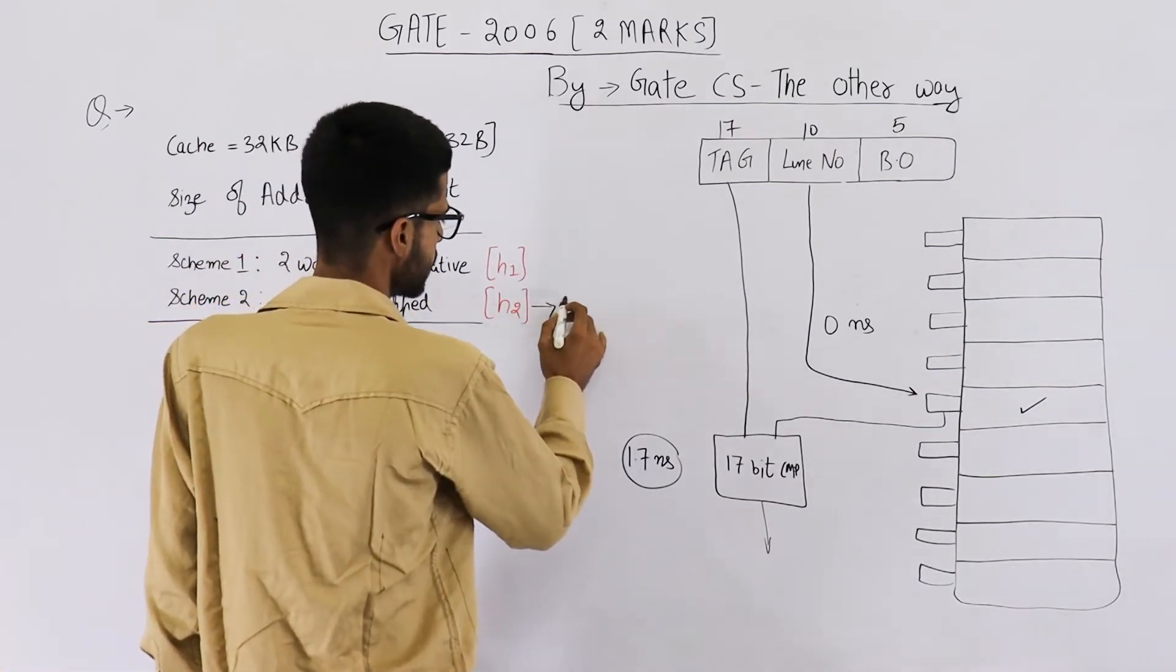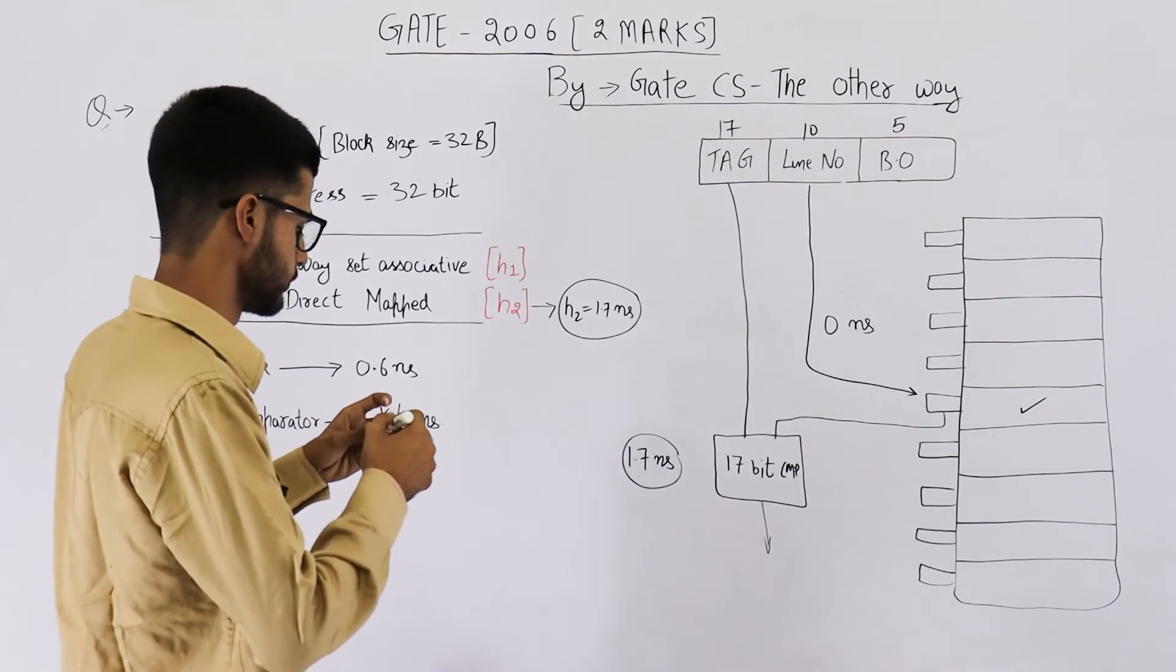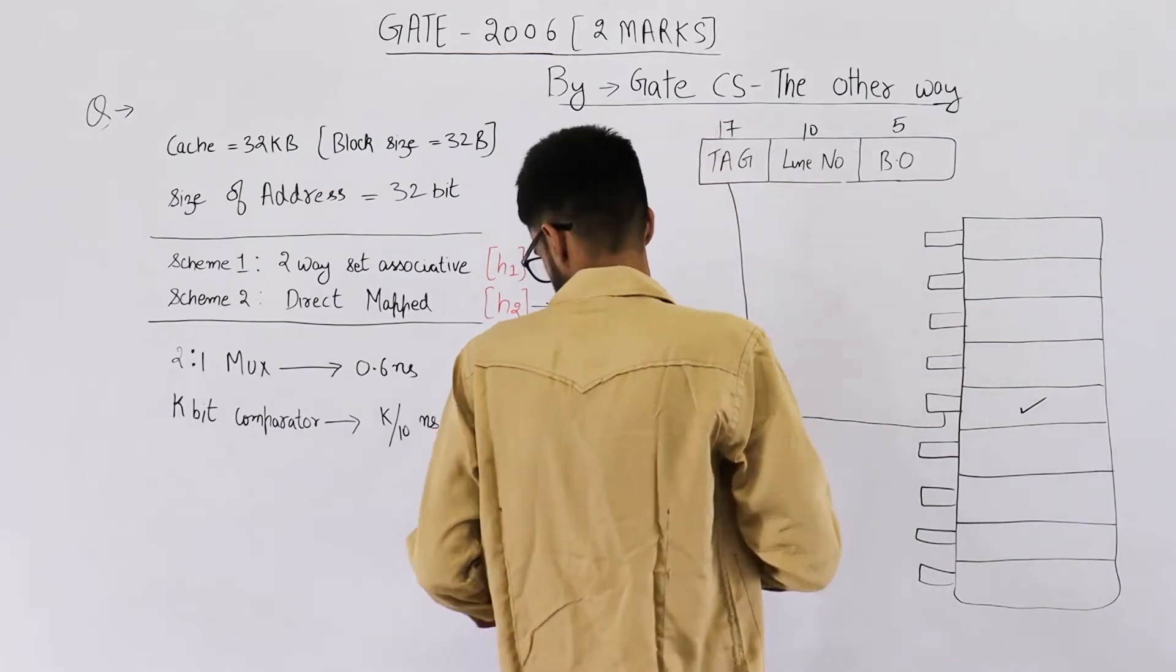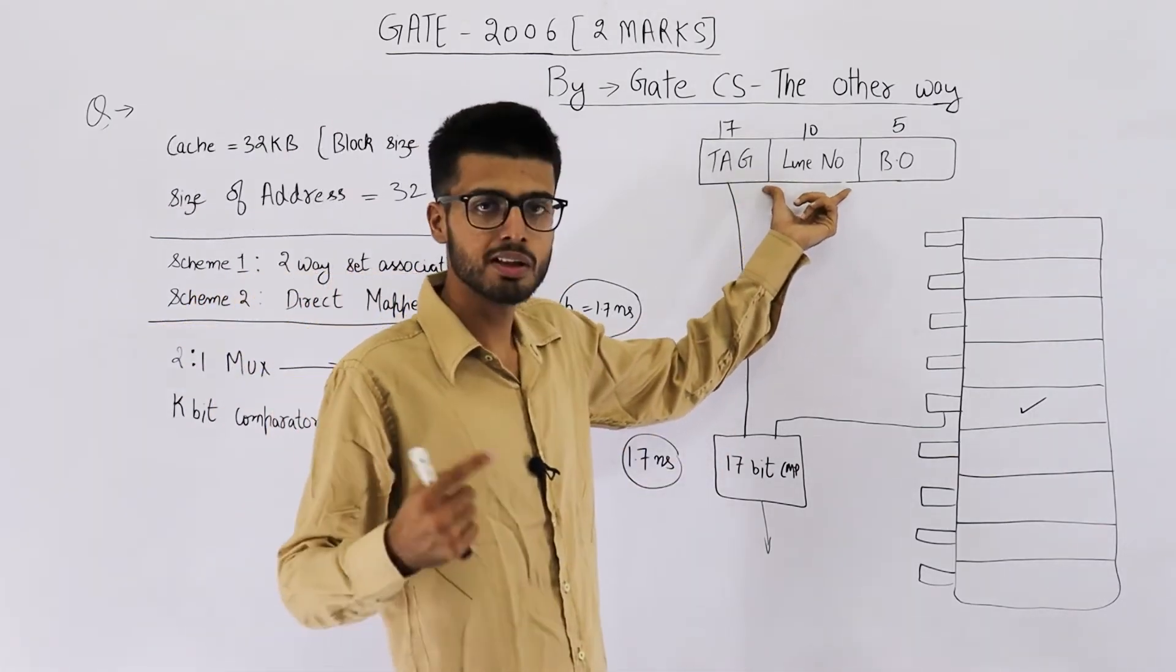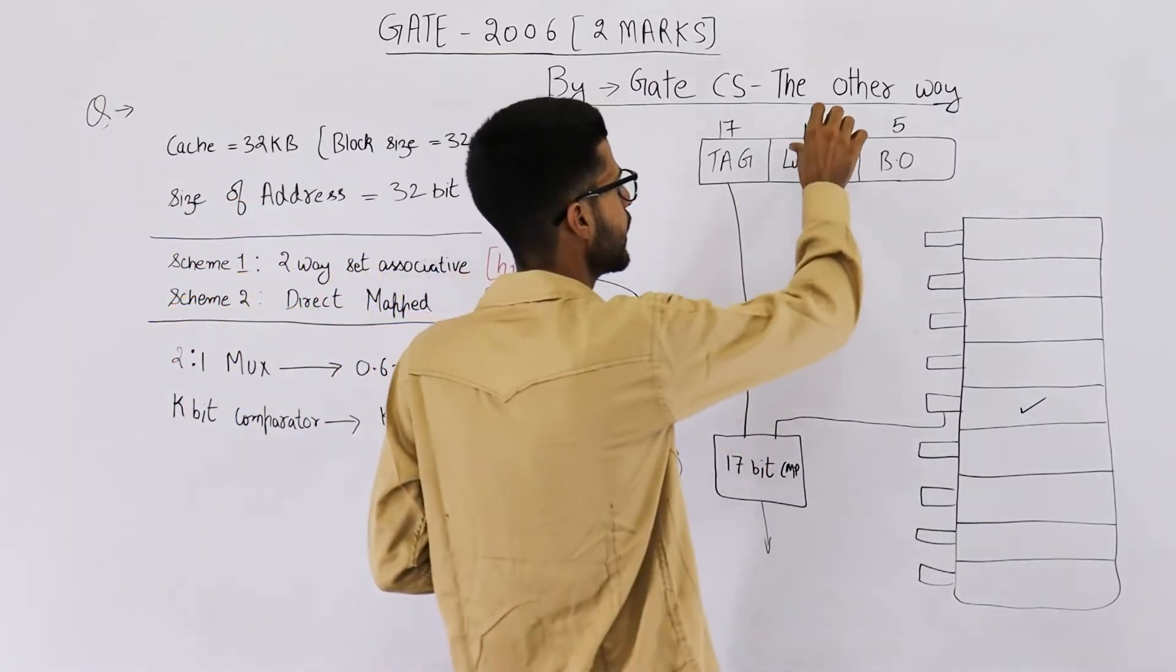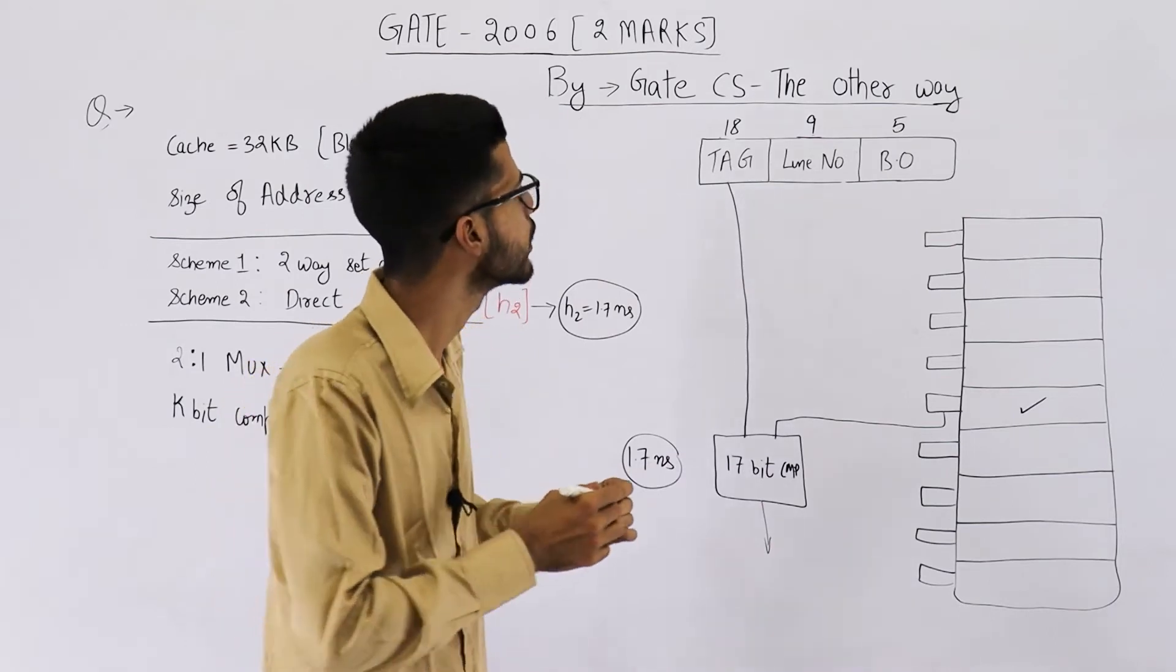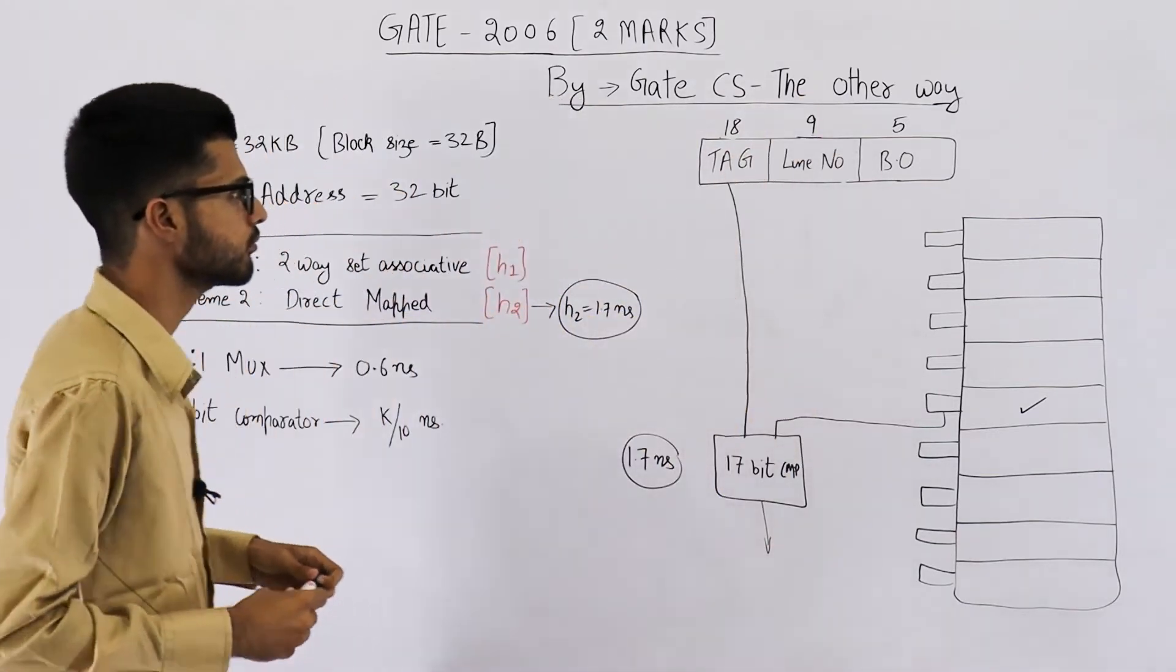So, answer for this part is, H2 is equal to 1.7 ns. Now, let's calculate H1. H1 is two-way set associative. You can simply guess that each set will have two cache lines or two cache blocks. That means, we are dividing total number of lines by 2. So, if you have two power 10 lines, now you will be left with only two power 9 lines. So, this field has to be 9 bits. Now, making this field 9 bits automatically means, tag will be increased to 18 bits. Earlier, it was 17. We have just shifted this division by 1 bit. Let me just explain in a bit detail.